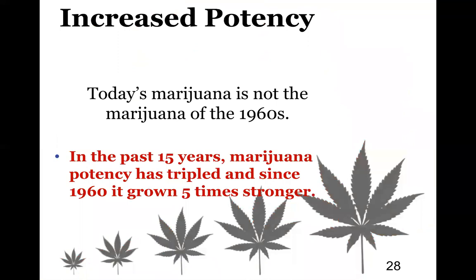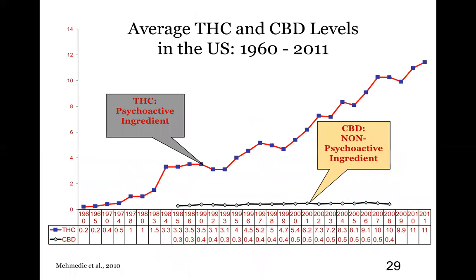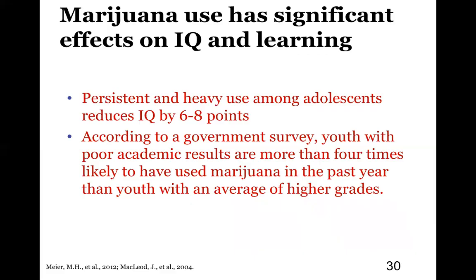You also need to know that THC has changed significantly — it's gotten much stronger. The THC in marijuana from the 1960s is five times stronger than it was then compared to now — meaning today's marijuana delivers much higher doses of the psychoactive agent that inhibits the brain. Looking at the graph, you can see the increase in THC levels over time through 2011. For heavy users, especially adolescents, IQ points dropped by six to eight points.